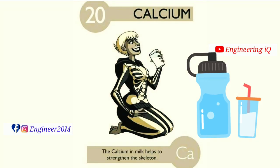Calcium: atomic number of calcium is 20. Calcium is found in milk and helps to strengthen the skeleton of the body. It is denoted by Ca.